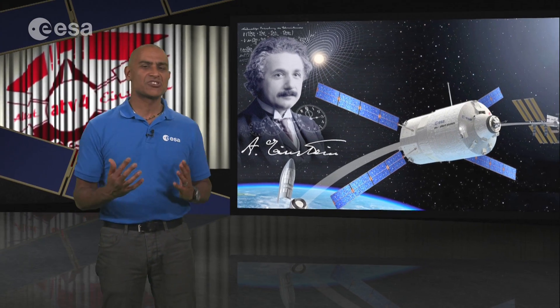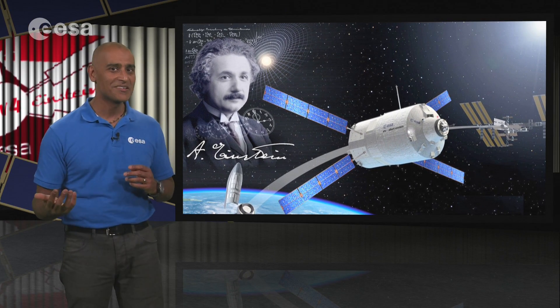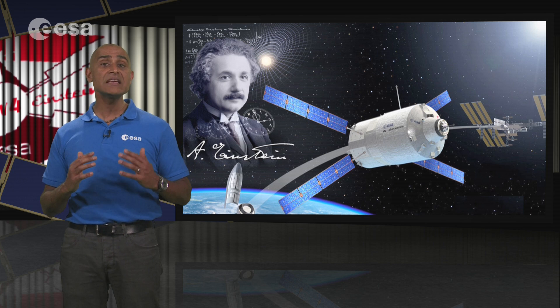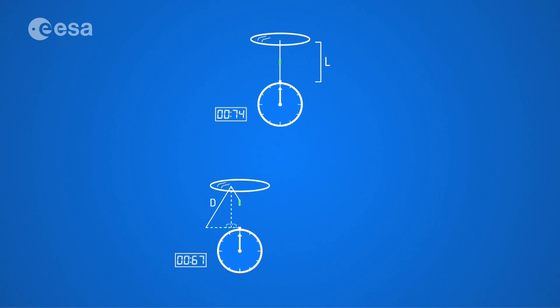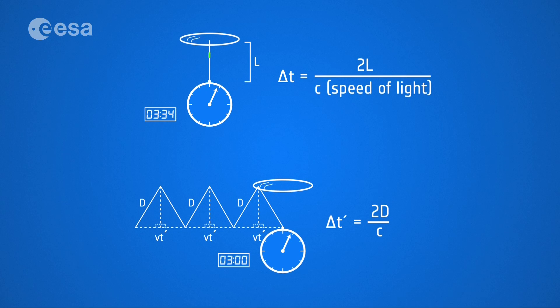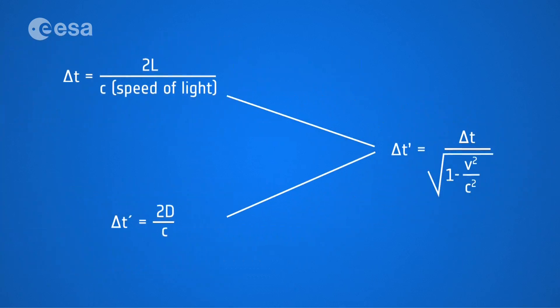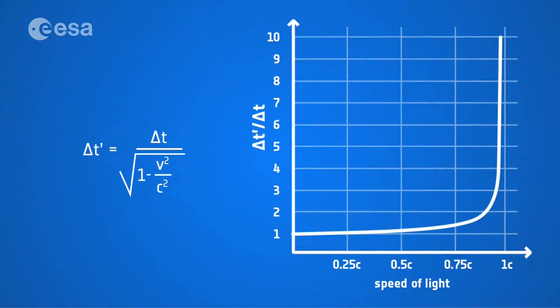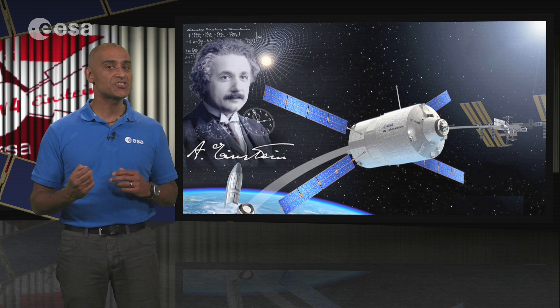Now, this seems contrary to all our everyday experience. My watch doesn't seem to lose time after I've run down the street. But the mathematics needed to derive the time dilation factor is a simple application of Pythagoras's principle to our laser pulse model. And what it shows is that the time dilation effect only really manifests itself at incredibly high relative velocities, those close to the speed of light. And when it does, the consequences are dramatic.